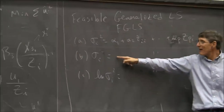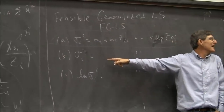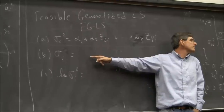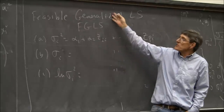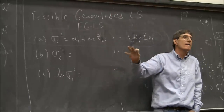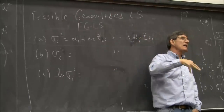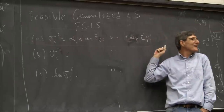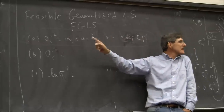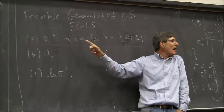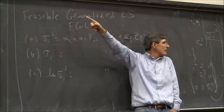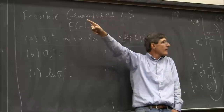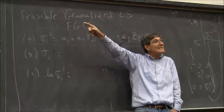That's your homework. We'll estimate the original model, save the ûᵢ squareds, estimate the variance model, and use our estimate of σᵢ to correct the original model for heteroscedasticity.